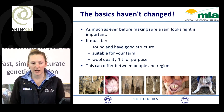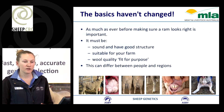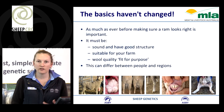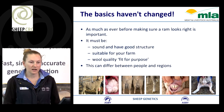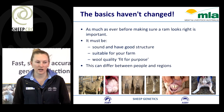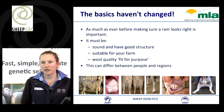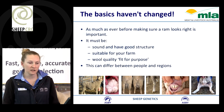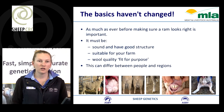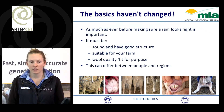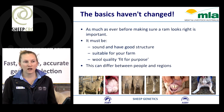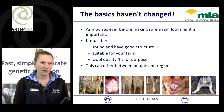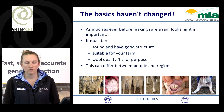The basics haven't changed. We need to make sure that the ram looks right and is going to do its job out in the paddock. This includes looking at sound structure, making sure the animal is suitable for the environment we run in, and making sure our wool quality is fit for purpose — that the ram has a leg on each corner and can do the job in the environment we're running in.